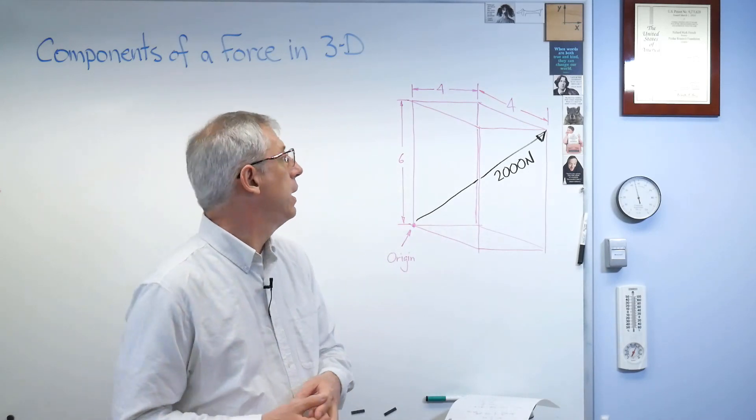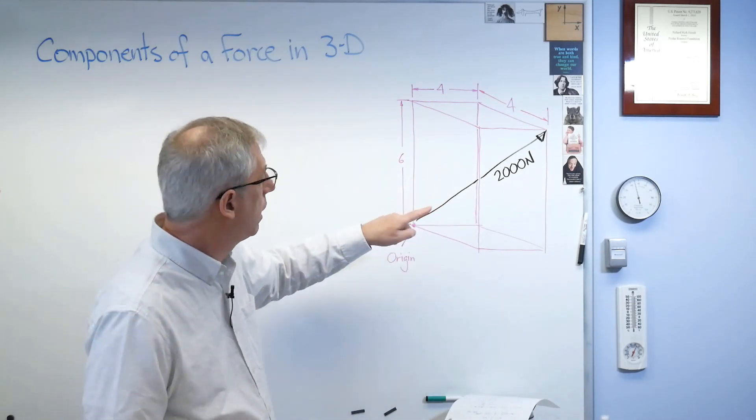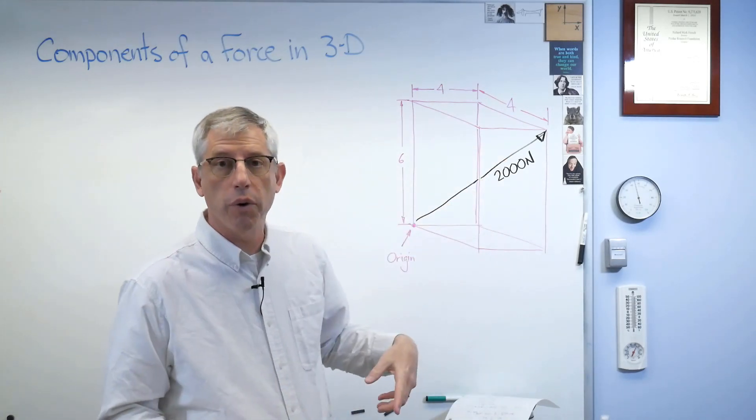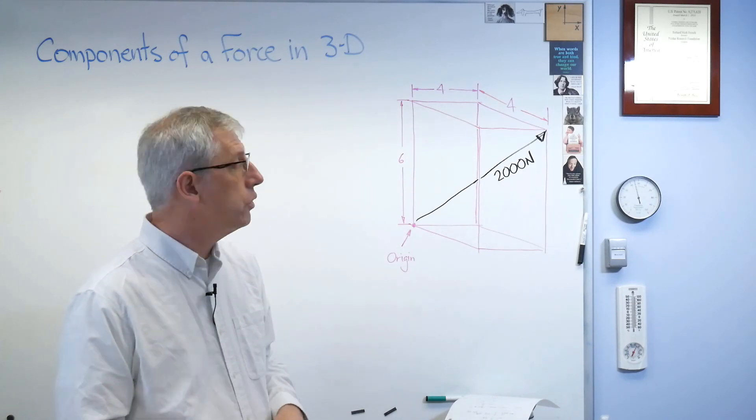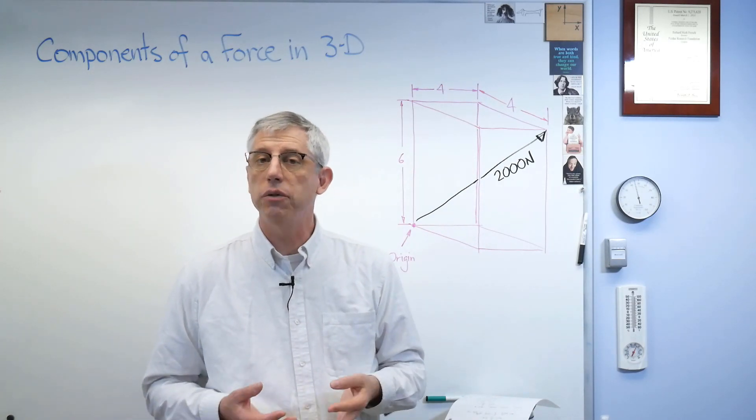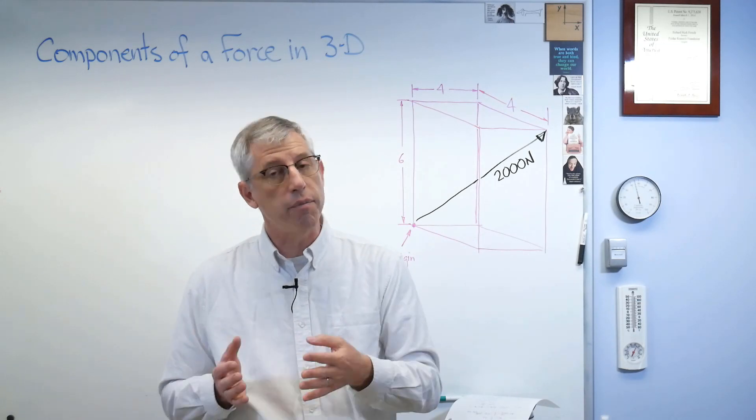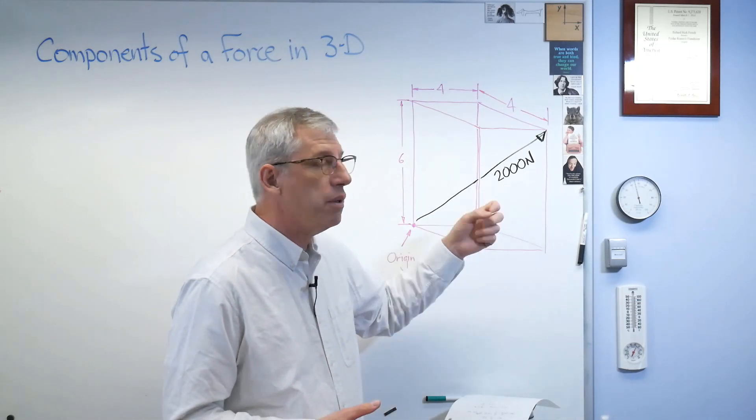We're going to need a sample problem, right? So I made this up. This black right there, that's our force, and it has a magnitude of 2,000 newtons. Now, forces have directions. Forces are vectors, so they have magnitude and direction. There's the magnitude.